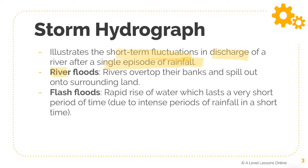Storm hydrographs can come in two forms: river floods and flash floods. River floods occur when the river channel has too much water and overflows, spilling out onto surrounding land. A flash flood is different — it refers to a rapid rise of water that lasts a very short period of time. Flash floods are very sudden, involving a huge amount of rainwater entering the river and causing massive flooding.